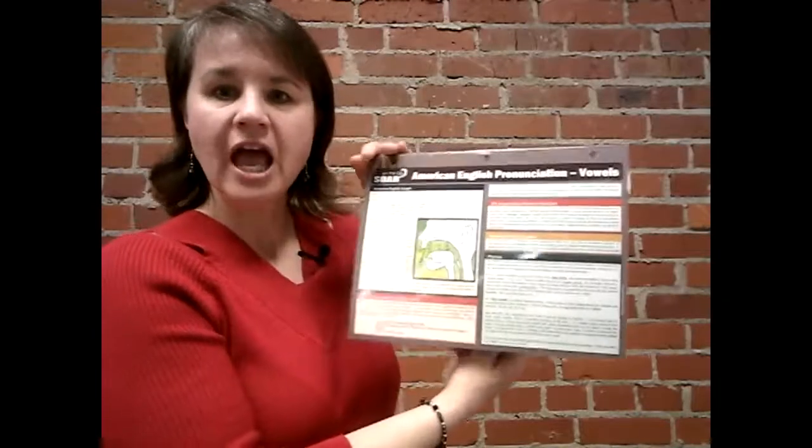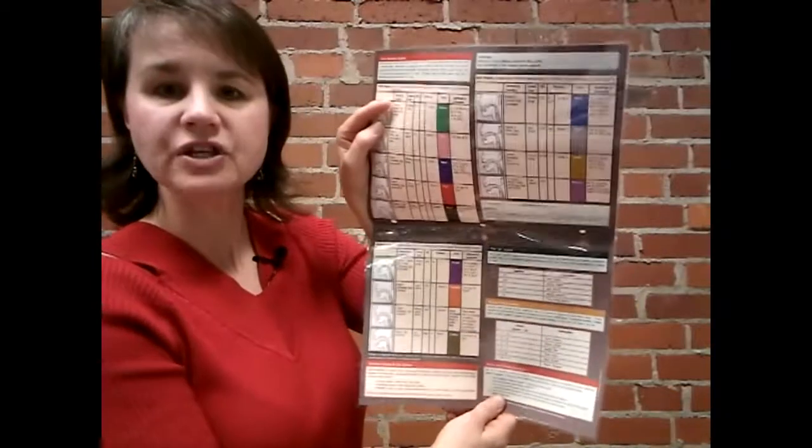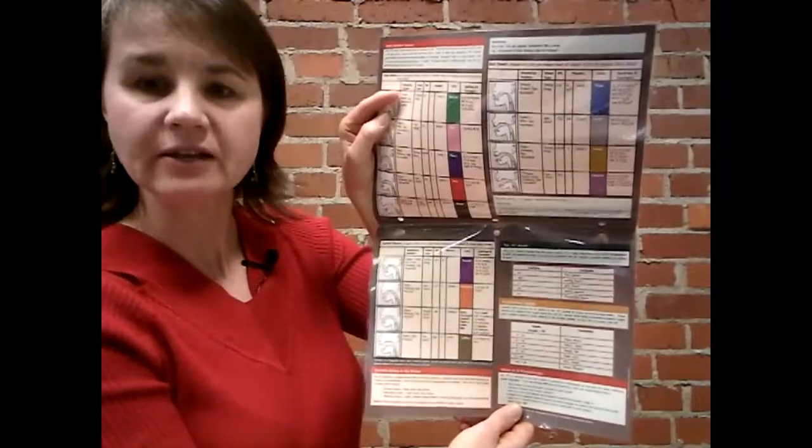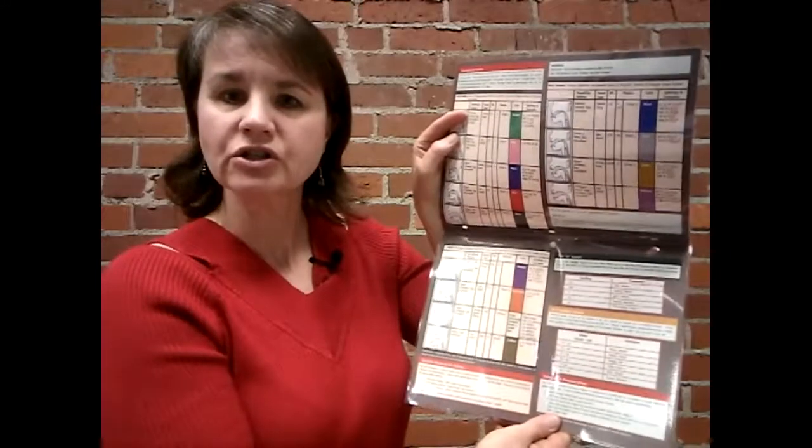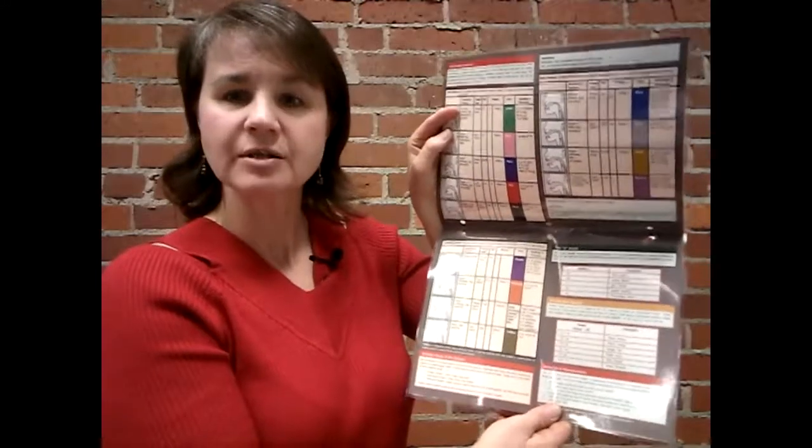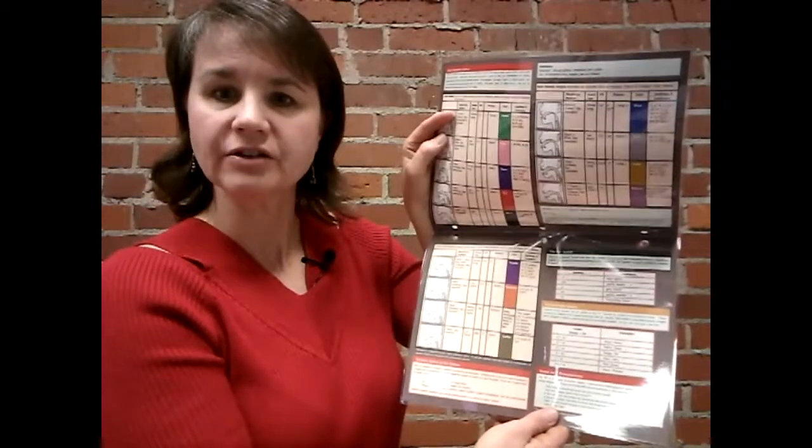Our vowels chart has illustrations and descriptions for pronouncing each of the different vowel sounds in English. And as you know, vowel sounds are very tricky, so this is very helpful. It also includes the IPA symbols, typical spellings for each sound, a color-coding chart, some other little-known rules, and ER and R-colored vowels, which are also very important.